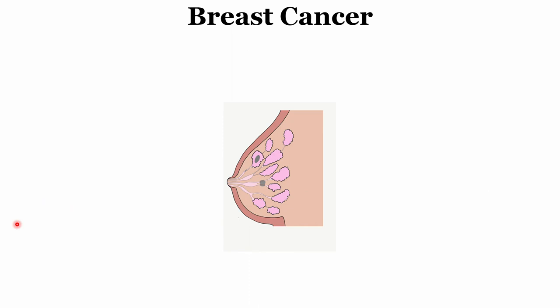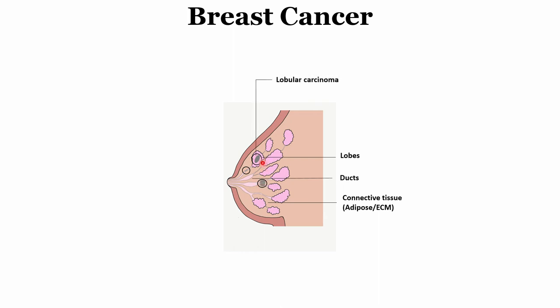Before approaching breast cancer with optical techniques, we should understand the basics of breast cancer and the different kinds of cancers we can diagnose. This is how the anatomy of the breast looks. We have the lobes, where the milk is created, and it is supplied through the ducts to the nipple. The disease generated within the lobes is known as lobular carcinoma.